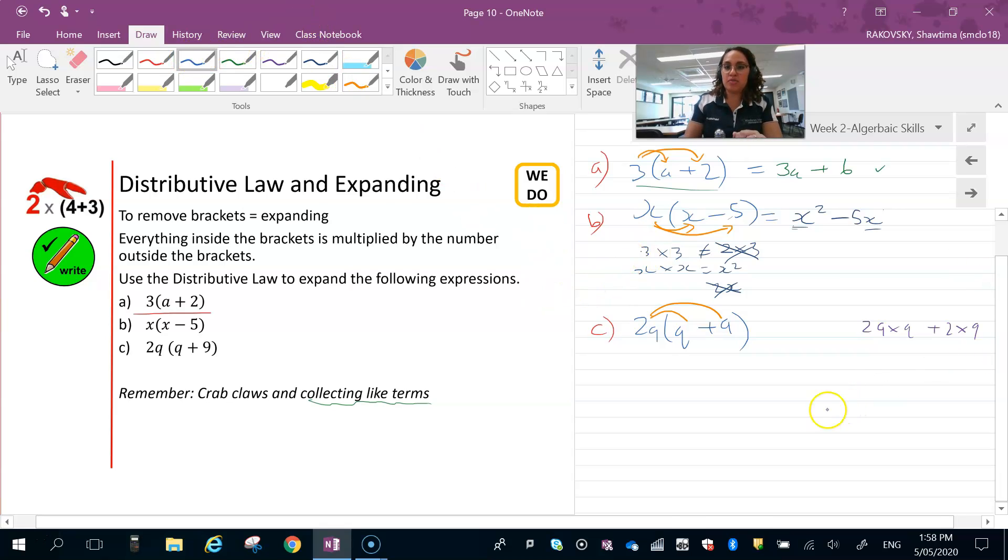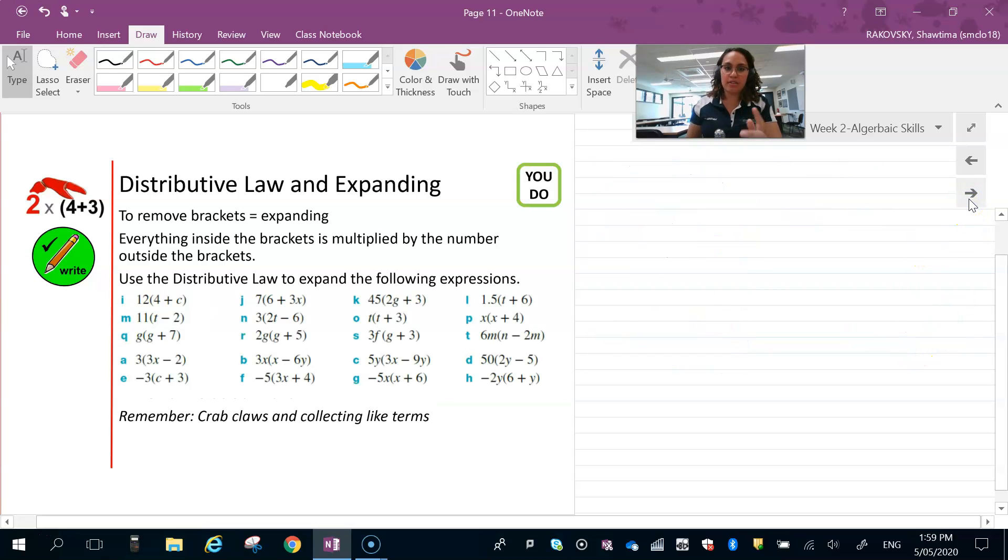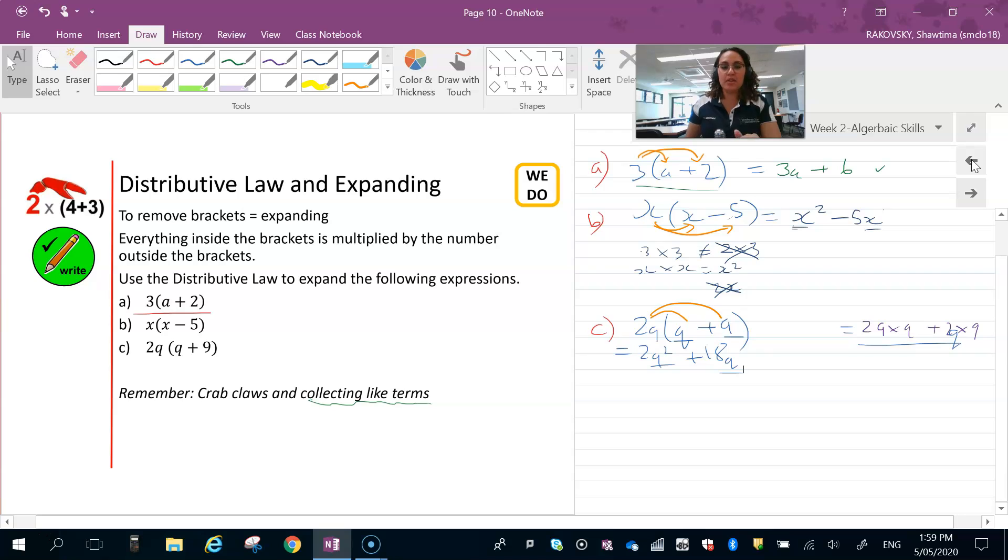Then if you see that, like eventually if you're still unsure, take that extra step here to do this one first and then write your next line, which is what I'm going to write now, which is 2q squared plus 18q. Remember it's everything here is multiplying all the terms in the bracket. I forgot the q over here, so 2q times 9. And then if we have a look again, not like terms because they're raised to different powers. So that is distributing the law and expanding brackets.